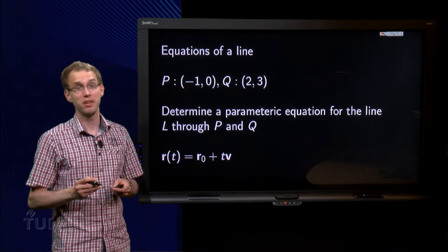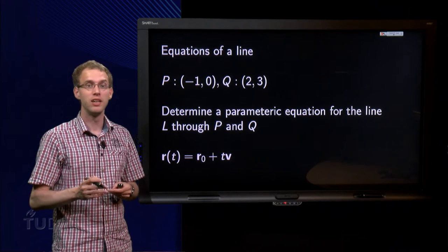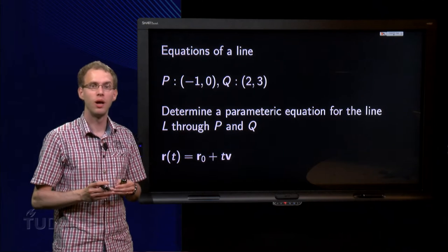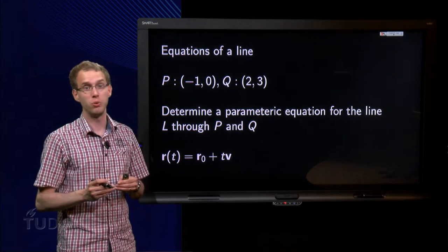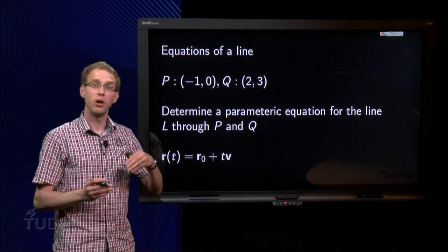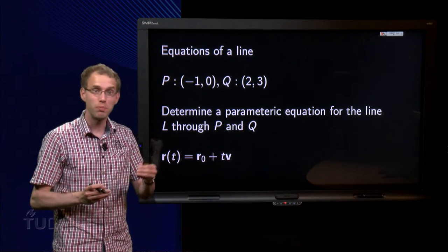We knew already how to give an equation for a line, y equals ax plus b. So why do we need a parametric equation of a line? Well, the equation y equals ax plus b only works in R2, whereas parametric equations work for any Rn. So if you want to describe lines in R3 and higher, we will need parametric equations.